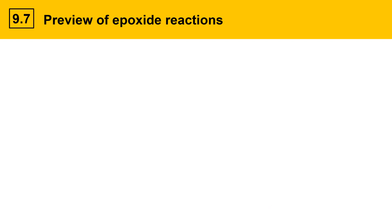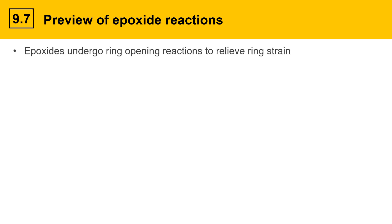Finally we'll take a look at epoxide reactions. These are reactions involving the three-membered epoxide ring. Epoxides undergo ring opening reactions to relieve ring strain — they have distorted bond angles from the ideal for an sp3 hybridized atom, and that makes them very reactive and prone to opening.